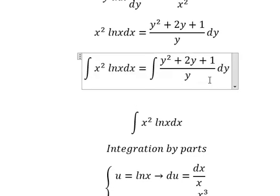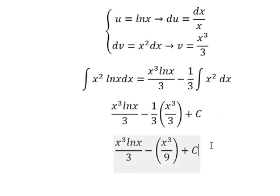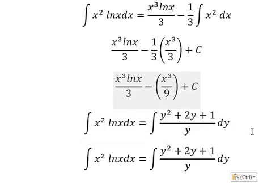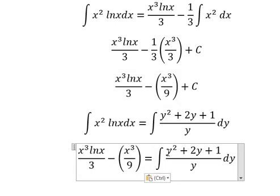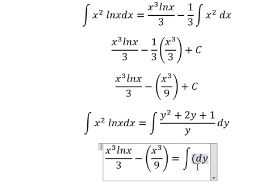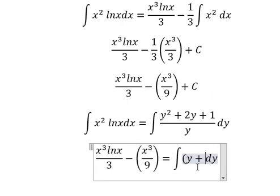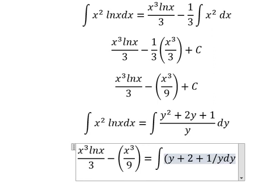And now we go back here. So this one I will put in here. Y squared divided by y, 2y divided by y, 1 divided by y, so we get y plus 2 plus 1 over y.